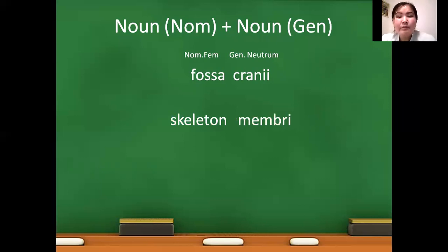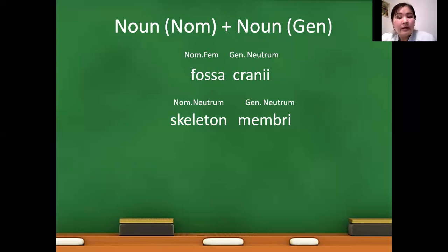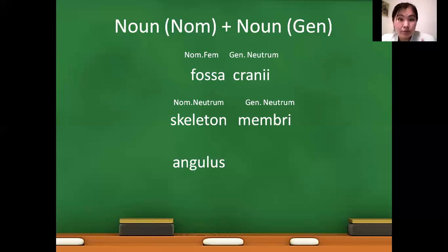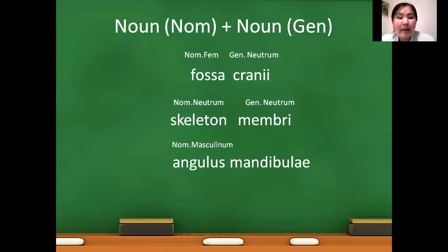Next example: skeleton membri — meaning part of the skeleton. Skeleton is nominativus neutrum, and membri is genitivus neutrum; the base form is membrum and we change -um to -i to construct the genitivus, as you may remember from previous classes. Next: angulus mandibulae — angulus is a masculine noun in nominativus form, and mandibulae is a feminine noun in genitivus form.